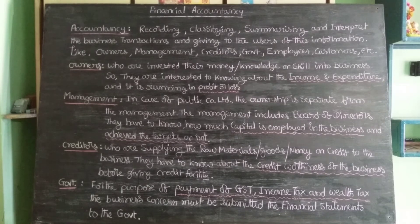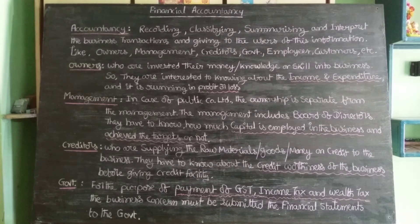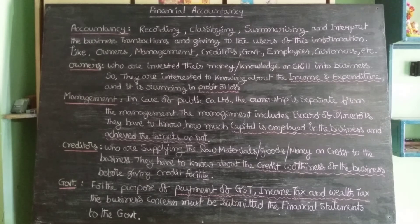The second user is management. In case of a public company limited, the ownership is separate from the management. The management includes the board of directors, also called managing directors or general manager. Managers have to know how much capital is employed in the business and whether the targets are achieved or not. So accounting information is also used by management.